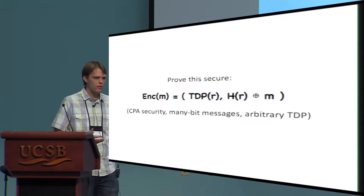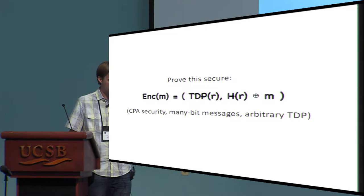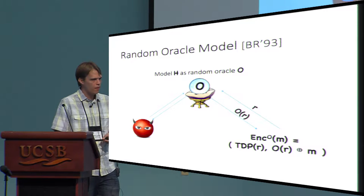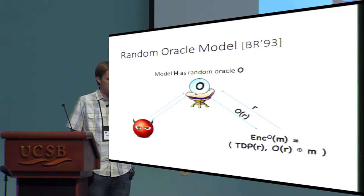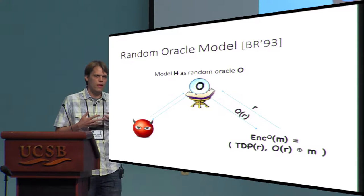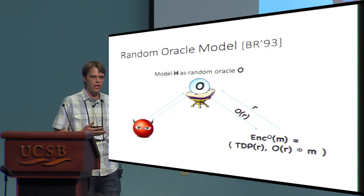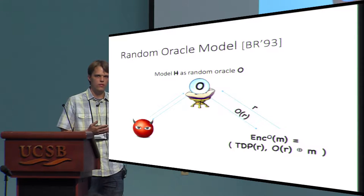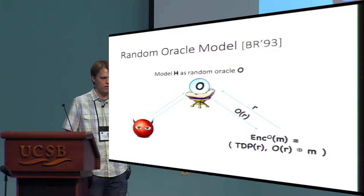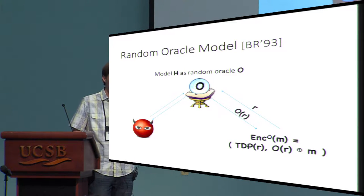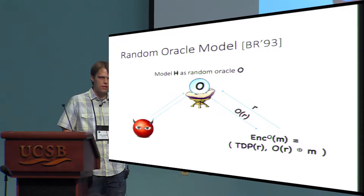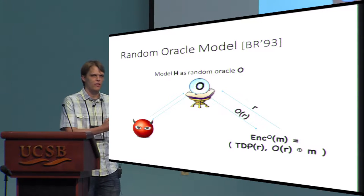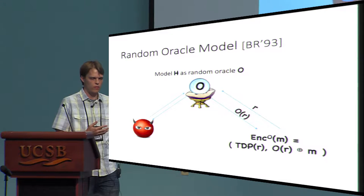The one thing I allow you to play with is the actual hash function H. The first idea might be to use random oracles. The random oracle model, introduced by Bellare and Rogaway, pretends that the hash function H is a truly random function in the sky, and the only way to interact with it is by querying it on inputs of our choice. We can easily rewrite the scheme as a random oracle scheme, and the adversary is also required to interact with the random oracle this way.